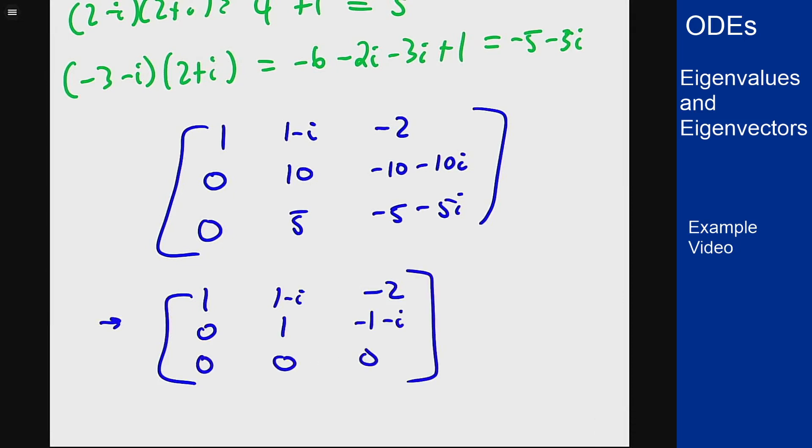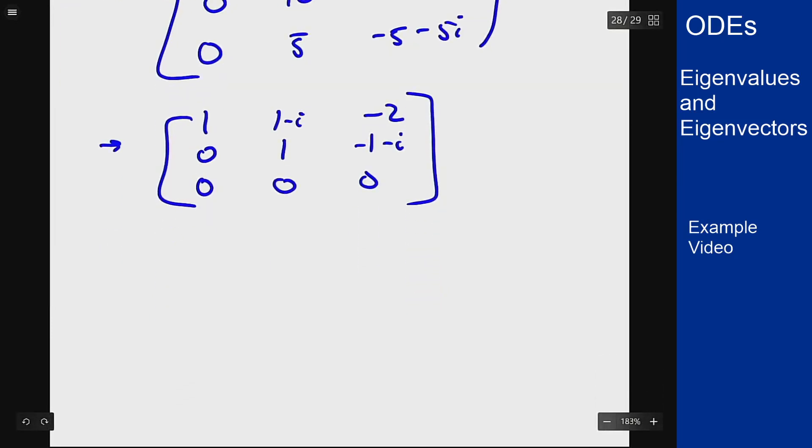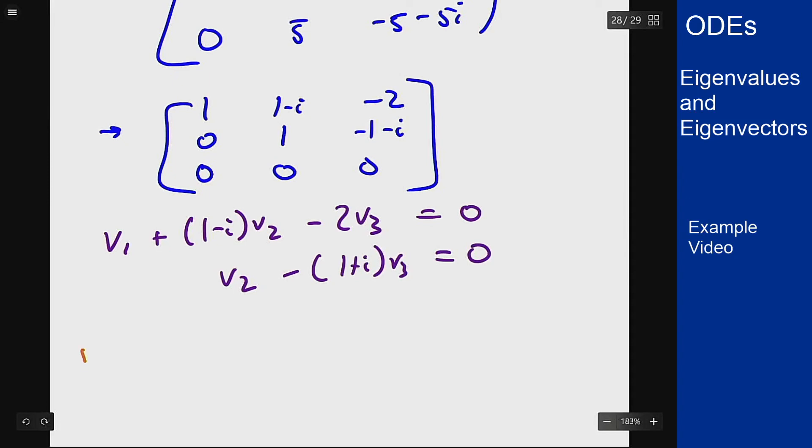And now I can find what I want for all my different components here. So the equations we get from this are: v1 plus (1 minus i)v2 minus 2v3 equals 0, and v2 minus (1 plus i)v3 equals 0. So I can pick v3 to be 1. The second equation here then tells me that v2 is (1 plus i) times v3, which is just 1 plus i.